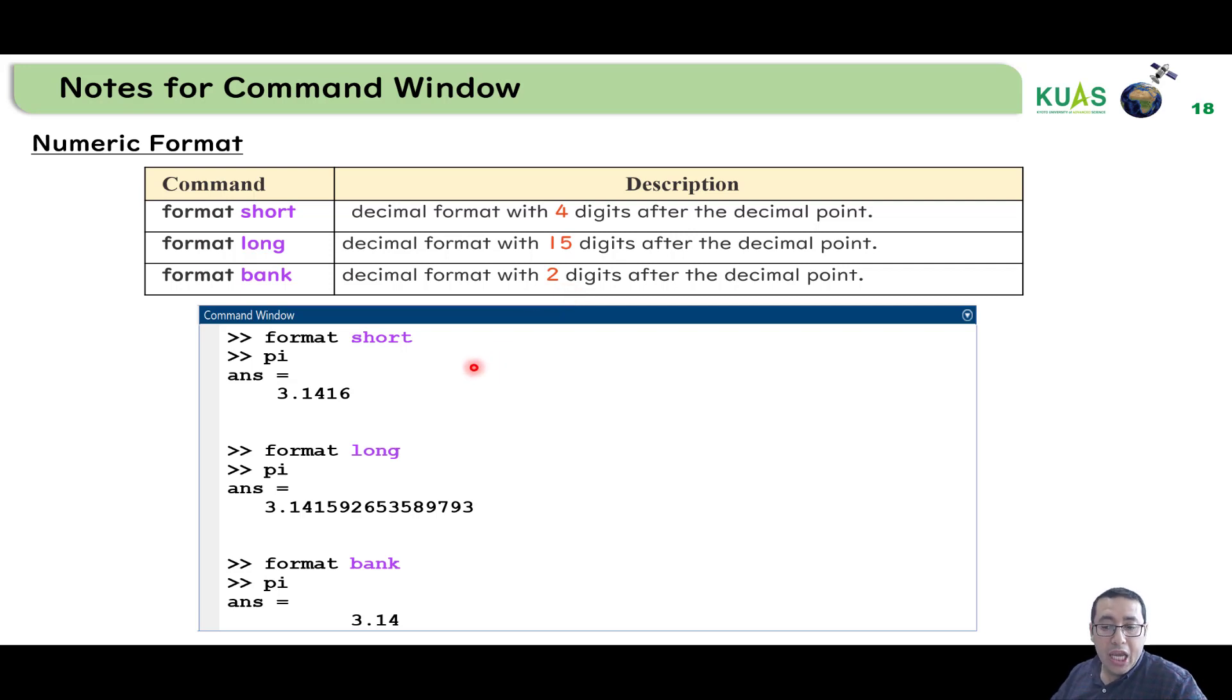For example, if we have a very long number with many digits after the decimal point, how many digits do you need to show for that number? If we select format short, only four digits will appear. If you select format long, this number will have 15 digits after the decimal point. If you select format bank, it will only show two. So all of this is pi, with different values in different formats.